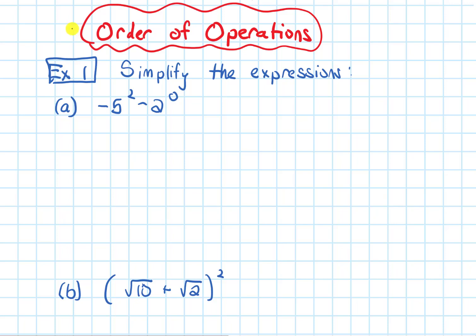In this video we will review order of operations by looking at some practice problems. The first example says simplify the expressions, and part a is negative 5 squared minus 2 to the 0.